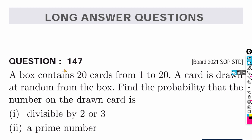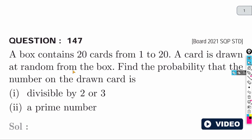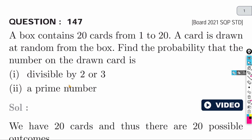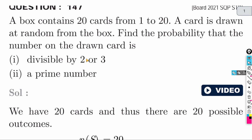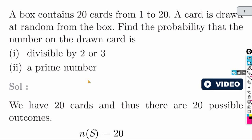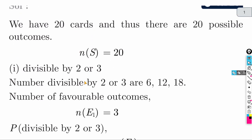Here we see a question: a box contains 20 cards from 1 to 20. A card is drawn at random from the box. Find the probability that the number on the drawn card is divisible by 2 or 3. We have 20 cards.